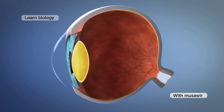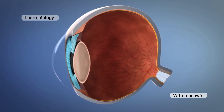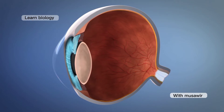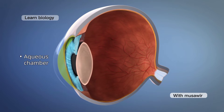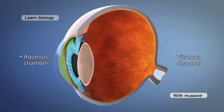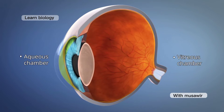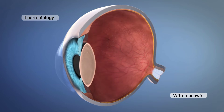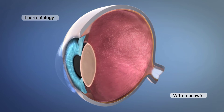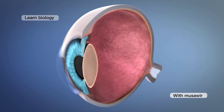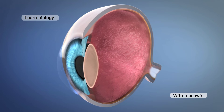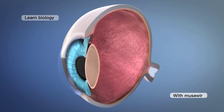The lens, along with the ciliary body, divides the inner cavity of the eyeball into two chambers: aqueous chamber in front and vitreous chamber behind. These chambers are filled with watery fluid and give shape to the eye and help in refracting the light rays to the retina.